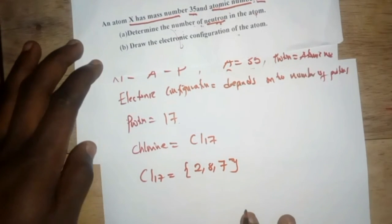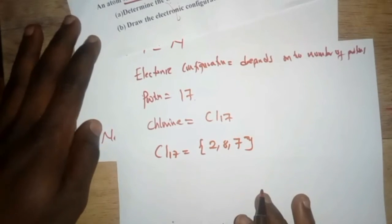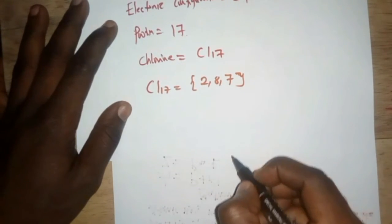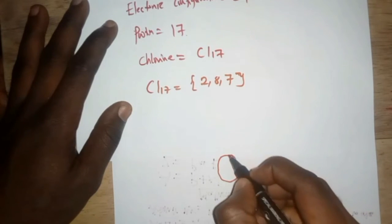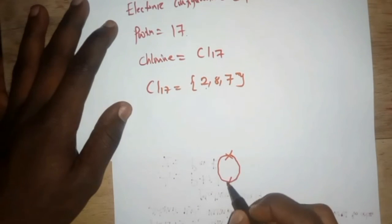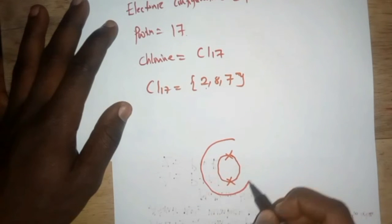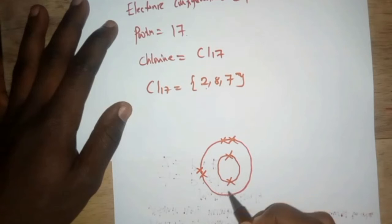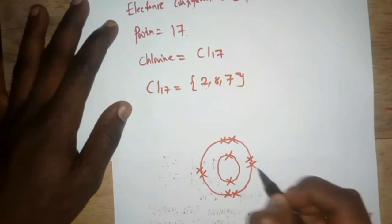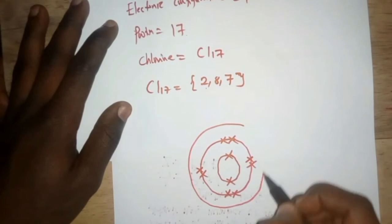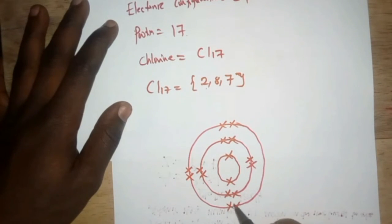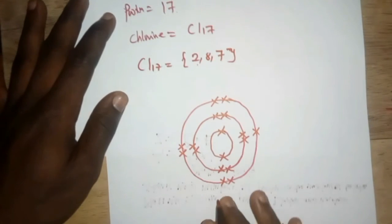The subsequent shells take a maximum of 8. So the second shell takes 8. Two plus eight is 10, leaving 7 electrons for the last shell. Therefore, the electronic configuration of chlorine is: first shell — 2, second shell — 8, and the last shell — 7.